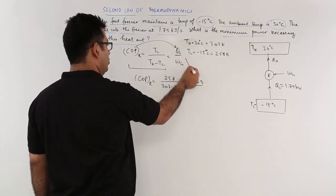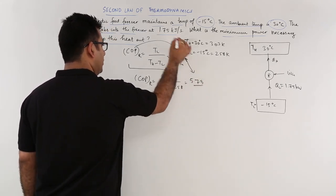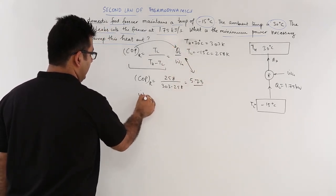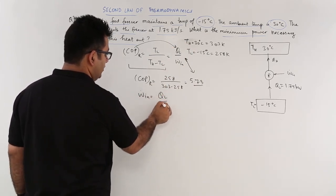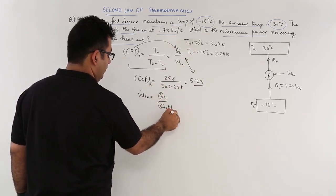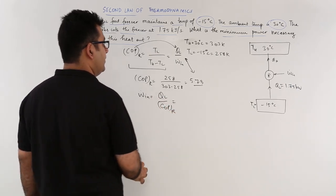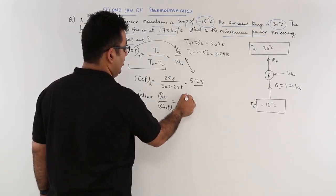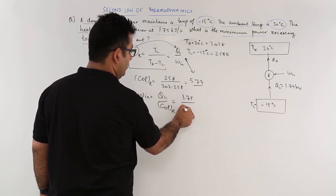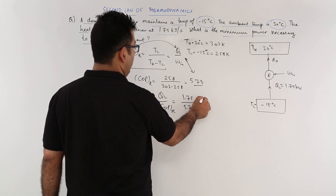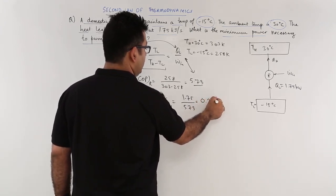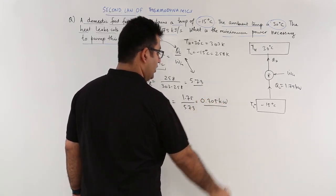Now let us equate these two values. So you have W_dot_in equals QL upon COP. So QL is 1.75 upon 5.73, so this comes out to be 0.305 kilowatts.